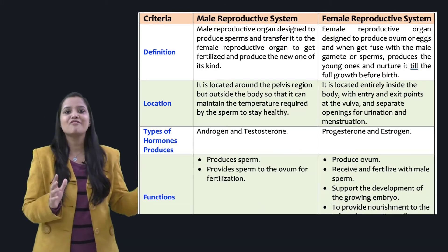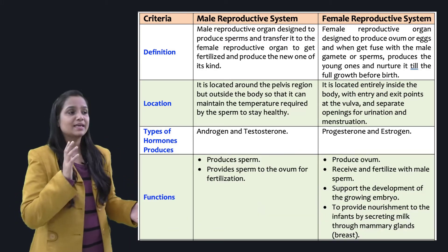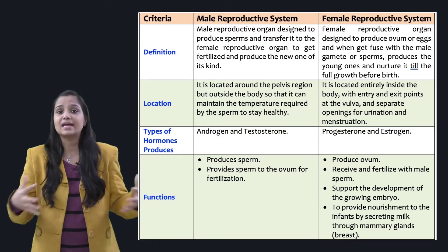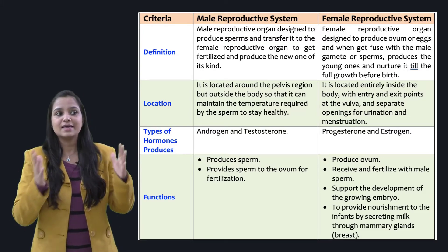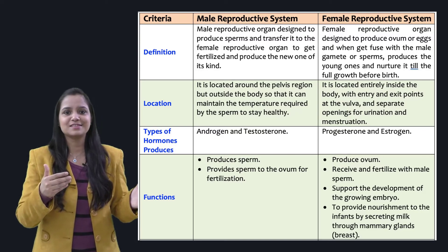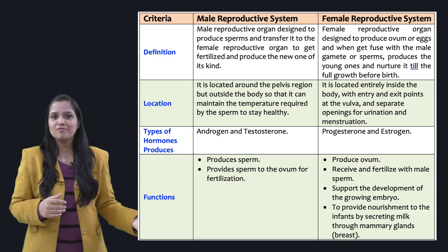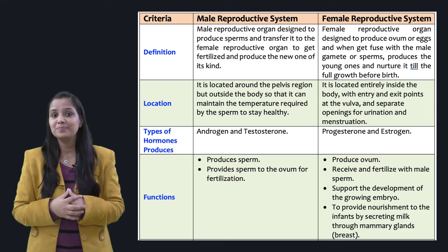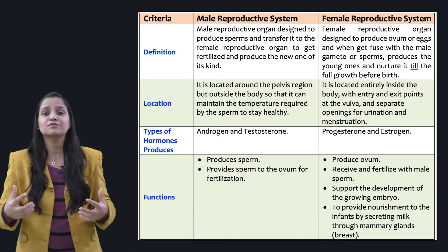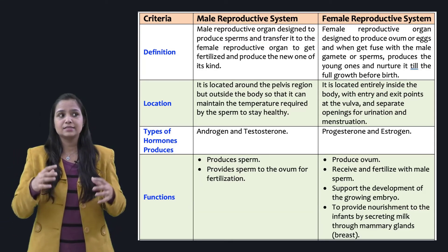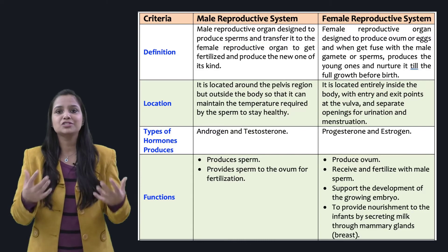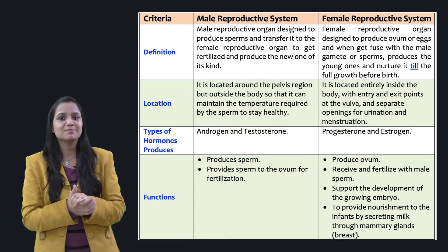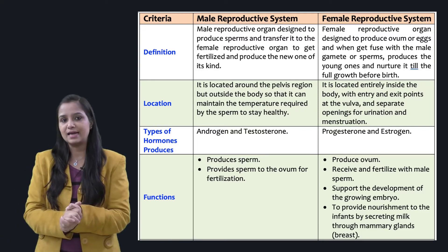Now the important part — the function. In the case of males, they produce sperm and provide it to the ovum for fertilization. In the case of females, the list is a bit longer: they produce the ovum, receive and fertilize the male sperm, support the development of the growing embryo, and provide nourishment to infants by secreting milk through mammary glands.